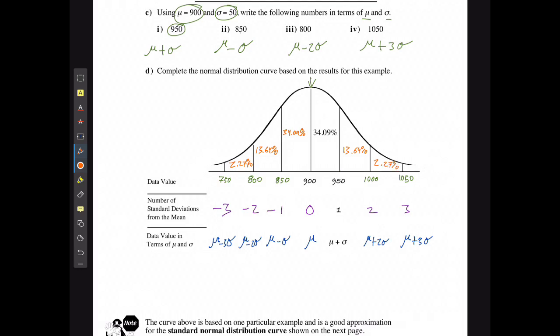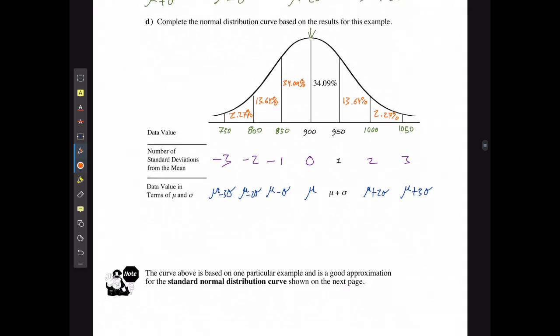The curve is based on one particular example and is a good approximation for the standard normal distribution curve shown on the next page. This is just a possible case for how much percentage of the data. If we had more than 44 examples, say we did 10,000 examples, all of these percentages would be much more accurate.